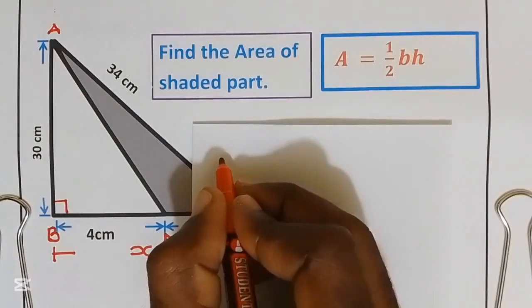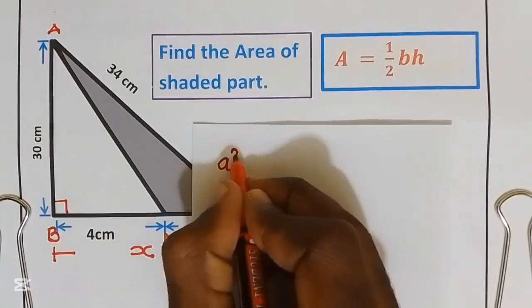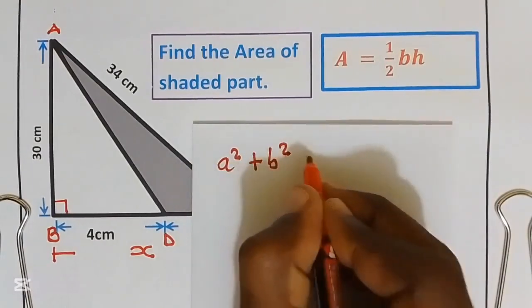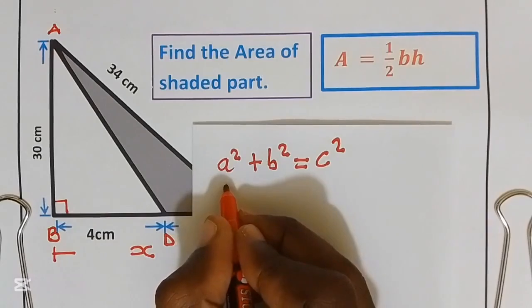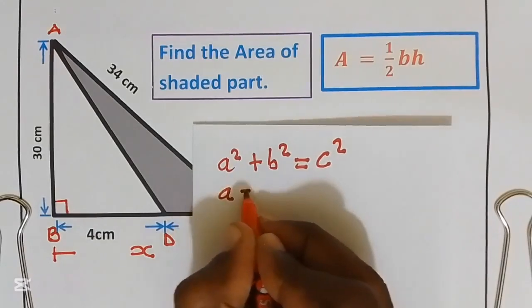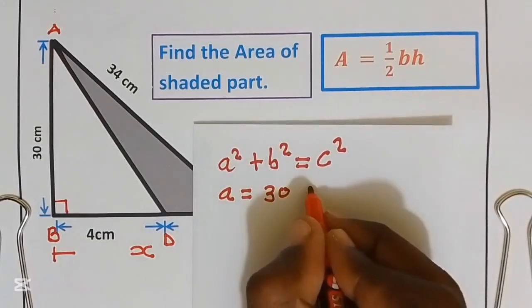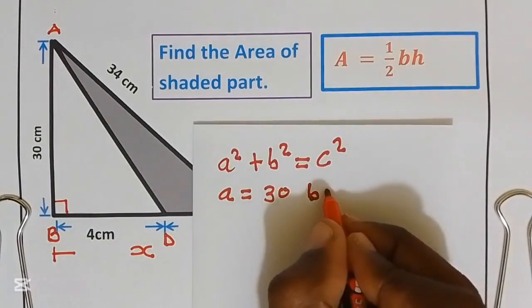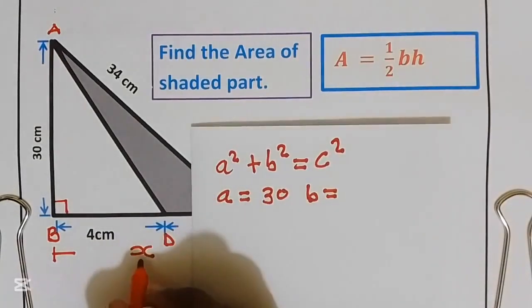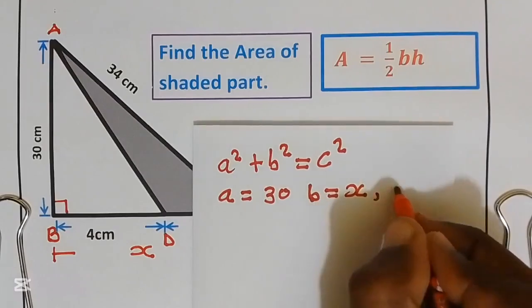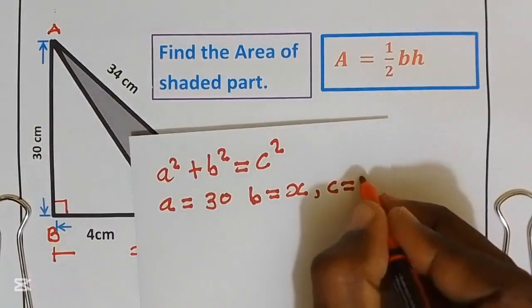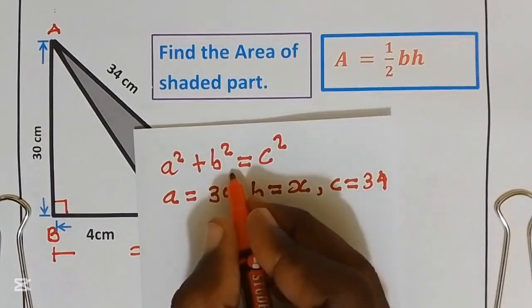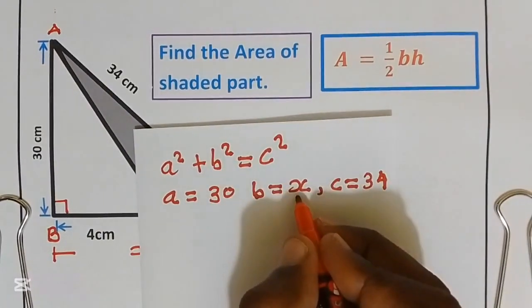So now let's find distance X. The Pythagorean theorem states that for a right-angled triangle, a squared plus b squared equals c squared. We have altitude a equals 30, b we don't know which we indicate as X, and c equals 34.